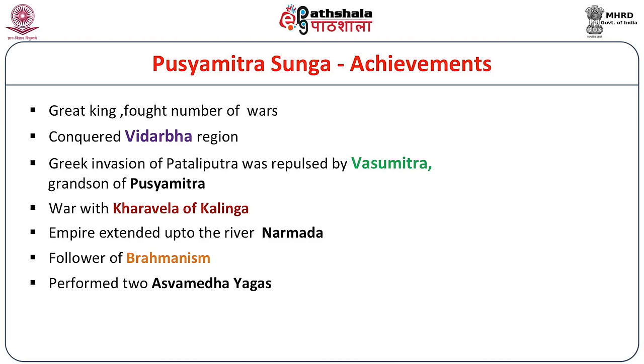The Greek invasion of Pataliputra was repulsed by Vasumitra, the grandson of Pushyamitra. He also waged war with Kharavela of Kalinga and extended his empire up to the river Narmada. He was a follower of Brahmanism and performed two Ashvamedha Yagas. He was a great patron of art and architecture and constructed many monuments in various places of India.